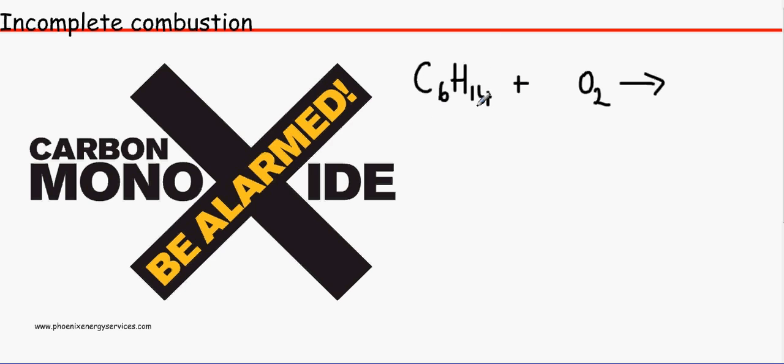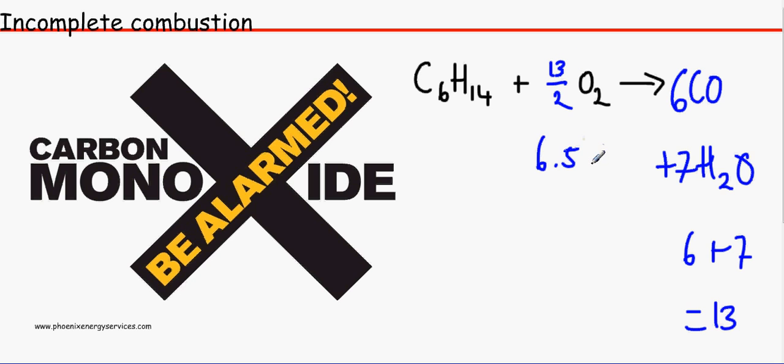We've got C6H14 over here reacting with oxygen, but remember it's limited. So it produces carbon monoxide plus water. We've got 6 atoms of carbon, so we need 6 carbon monoxide. We've got 14 hydrogen, so we need 7 water. We need to calculate how much oxygen. 6 plus 7 which is 13 single atoms of oxygen. We need to divide it by 2, so we have 6.5 molecules of O2.